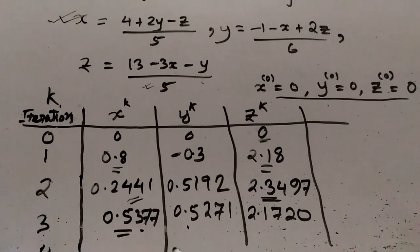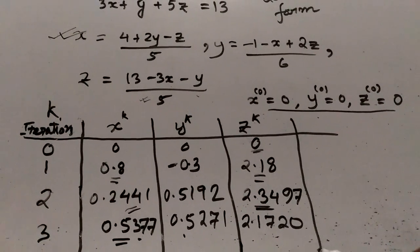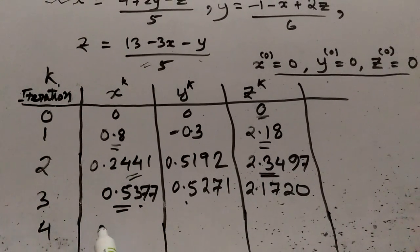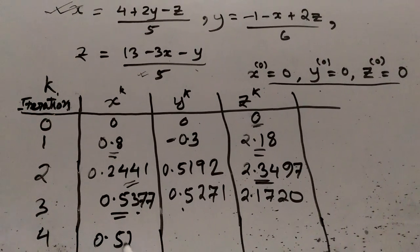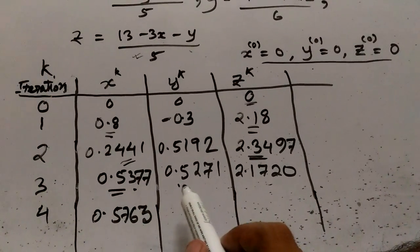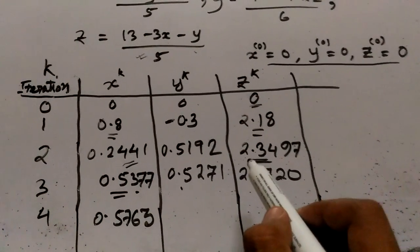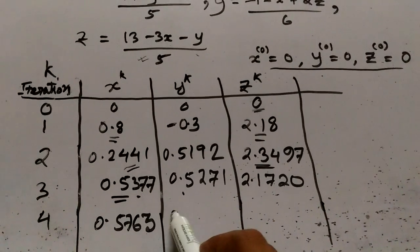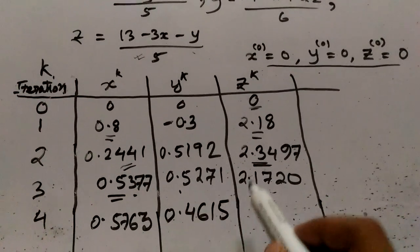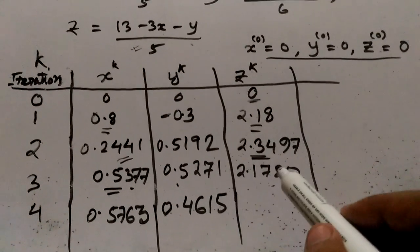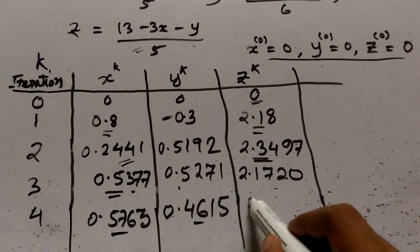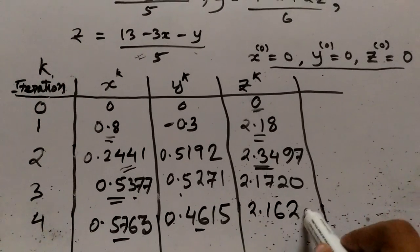In the fourth iteration, I calculate x from the previous z and y values, giving x = 0.5763. Then I calculate y from the current x and previous z, giving y = 0.4615. Finally, z is calculated from the current x and y values as z = 2.1628.